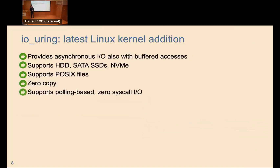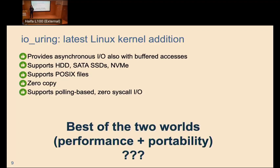The last API is io_uring, the latest addition within the Linux kernel, integrated since kernel version 5.1. It tries to get the best of both worlds — portability and performance. io_uring provides asynchronous IO for both buffered and unbuffered access, supports a wide array of storage devices, is POSIX-compliant, enables zero-copy IOs, and supports polling-based zero-system-call IO operations.